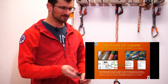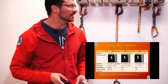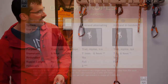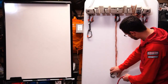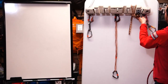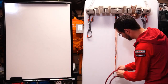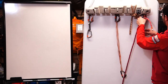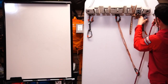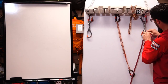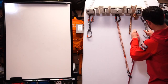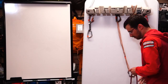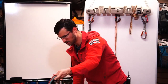As far as ropes, there are three different types: single, half, and twin. Most of us have used the single rope system — one rope clipped through each piece of protection. The trouble with that is it's not redundant, so we have the half and twin rope methods as alternatives.